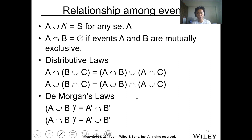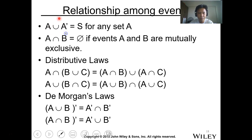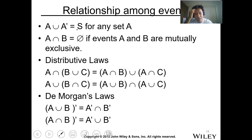The relationship among events: the union of an event and its complement is just the sample space for any set A. For mutually exclusive events, the intersection of the two events A and B is just an empty set.